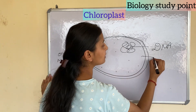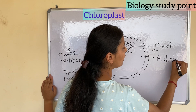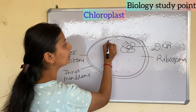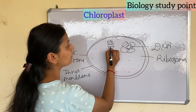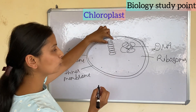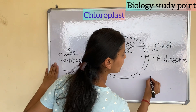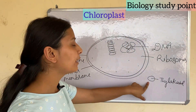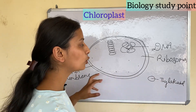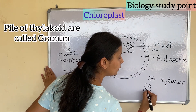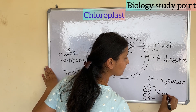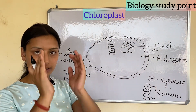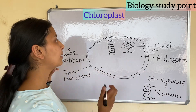Inside the chloroplast there are ribosomes, which are involved in protein synthesis. The main structural component is the thylakoid. If I draw one vesicle, we call that one vesicle a thylakoid. When thylakoids are arranged as a pile, that pile is known as a granum.